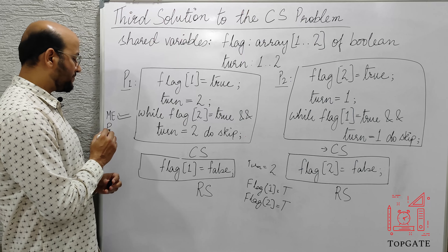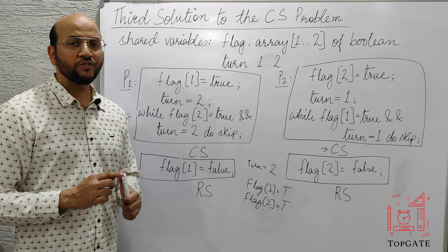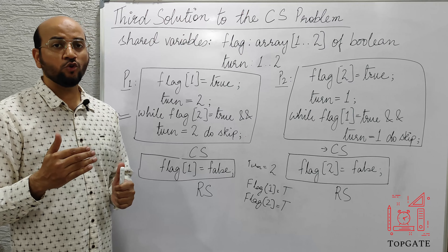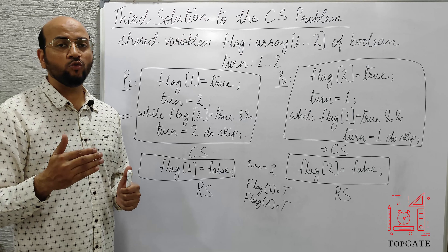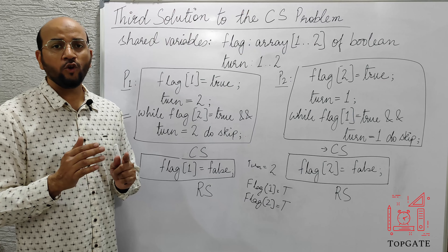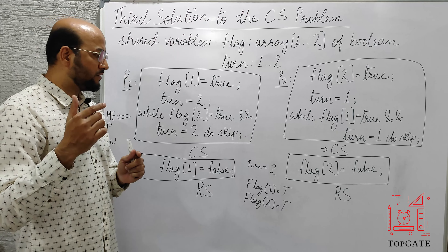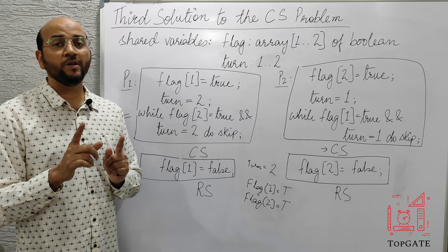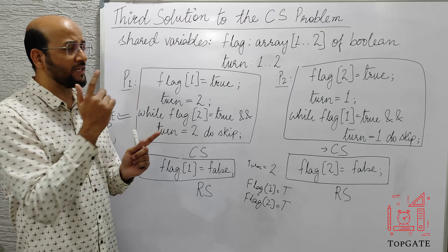The second requirement for the critical section problem solution is progress. Progress says that only those processes willing to go to the critical section will be allowed to take part in the decision-making process of who enters. Processes not willing to go will not participate. The second aspect of progress is that there should be no deadlock — unlike the previous solution where both P1 and P2 were stuck in the entry section simultaneously.